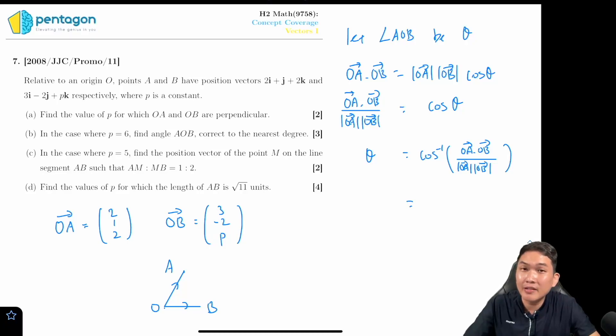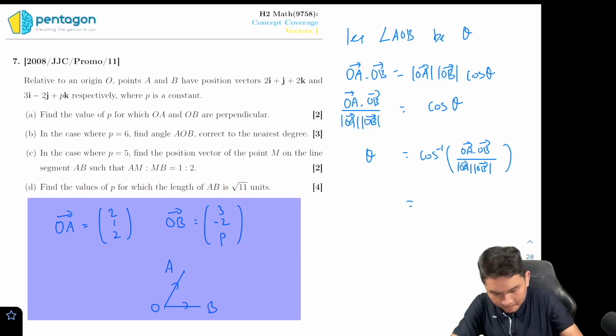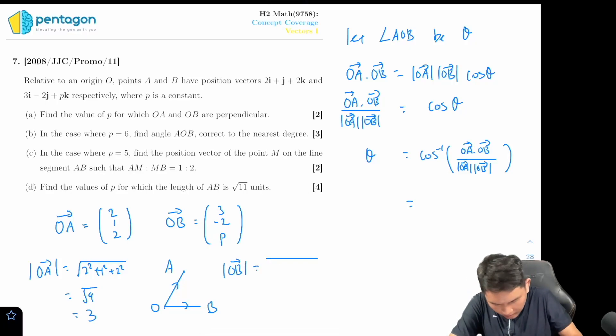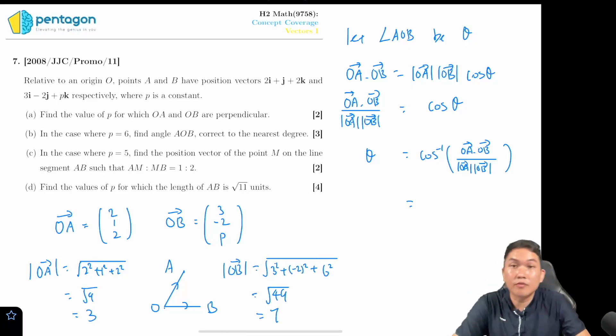Then the next step would be to put in the numbers: OA, OB, mod OA and mod OB. Perhaps it would be a good idea to work out what's mod OA and mod OB at the sides in our planning space over here, which is equal to three and which is equals to seven.